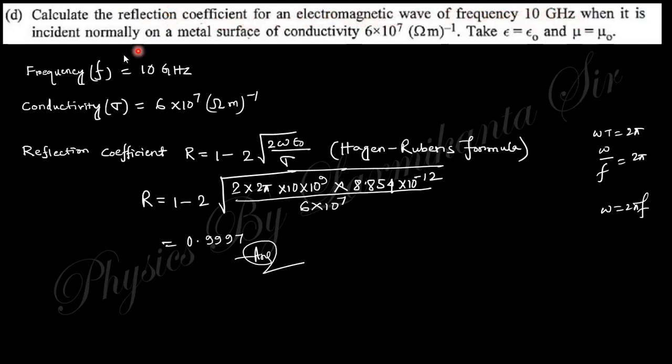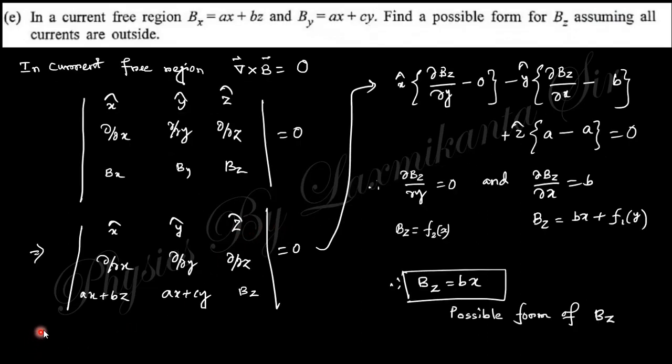Next question: calculate the reflection coefficient for the electromagnetic wave of frequency 10 GHz when incident normally on a metal surface of conductivity σ = 6×10^7 Ω⁻¹m⁻¹. The reflection coefficient related with the metal is like that. If you put this value, you will obtain this relation.